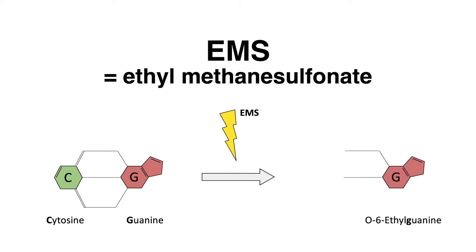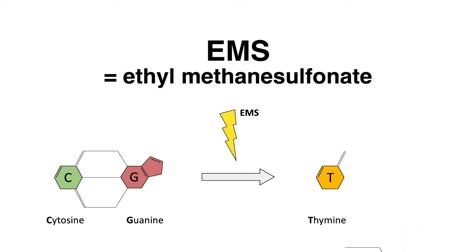The consequence of this chemical modification is that guanine can now form hydrogen bonds together with thymine. After DNA replication, this results in a nucleoside substitution. The GC base pair was converted to an AT base pair.